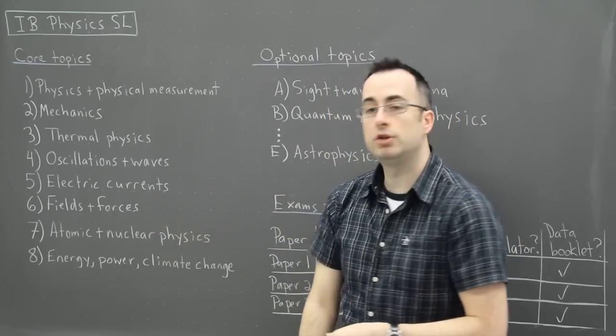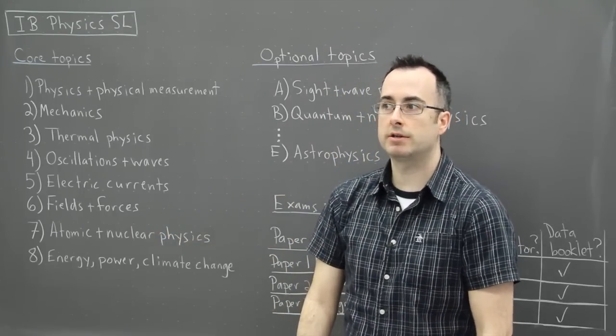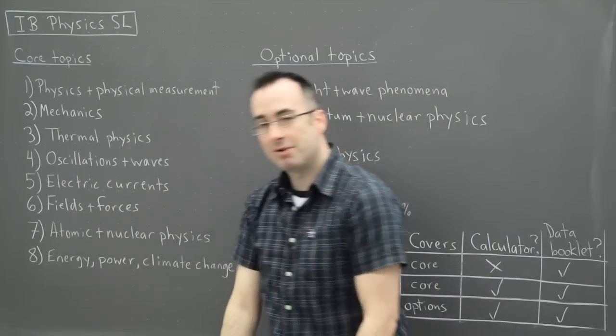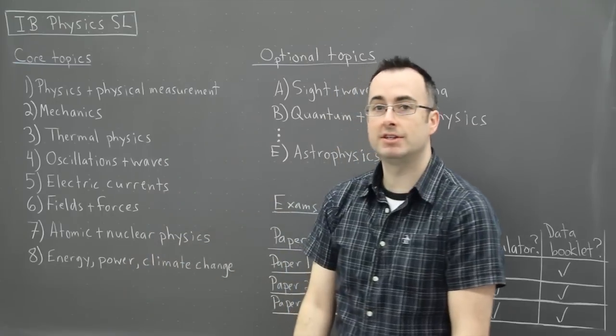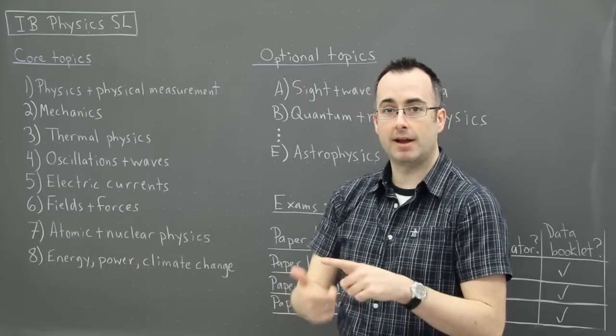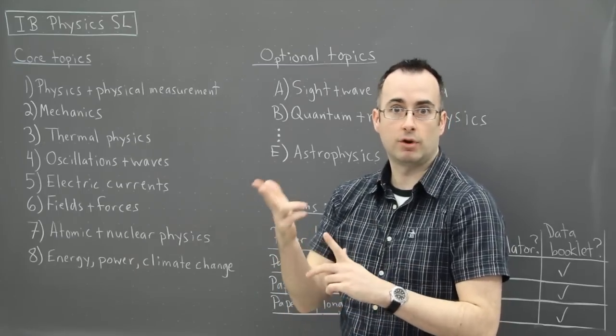Number seven is atomic and nuclear physics. There we're going to talk about things like the atom, no surprise there, as well as the nucleus of the atom and how to actually deal with things like radioactive decay. So we'll be talking about alpha and beta and gamma decay for example.